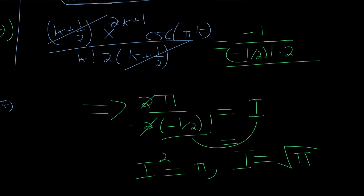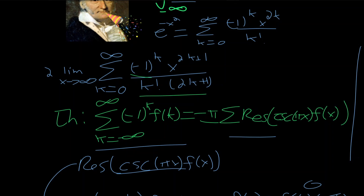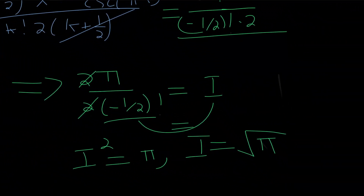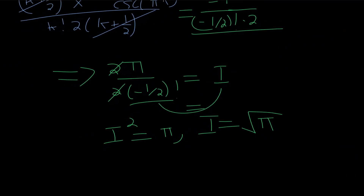It should be noted that the reason we can use this formula — which sums from k equals negative infinity — is the factorial in the denominator: k factorial for any negative integer blows up, making those terms zero. You might also object that when bounding the contour integral it doesn't go to zero, but if you pick a sufficient x, it is bounded and the formula still works, as evidenced here by the accurate result. I hope you all enjoyed this video, and I'll catch you in the next one. Thanks for watching.